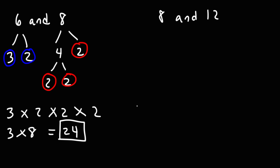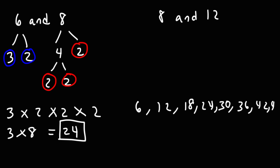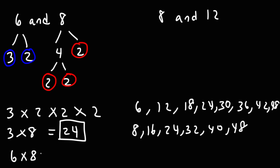And we can confirm this. Multiples of 6 are 6, 12, 18, 24, 30, 36, 42, 48. Note that if you multiply 6 and 8 you'll get a common multiple of 48, but that's not the least common multiple. As you can see, the least common multiple is 24. Both 48 and 24 are common multiples, but 24 has a lower value, so that makes it the least common multiple of 6 and 8.